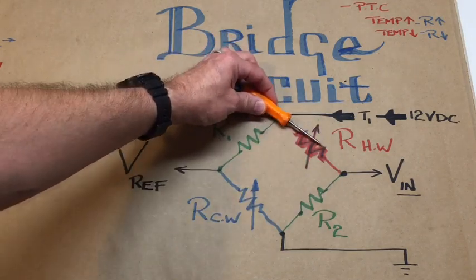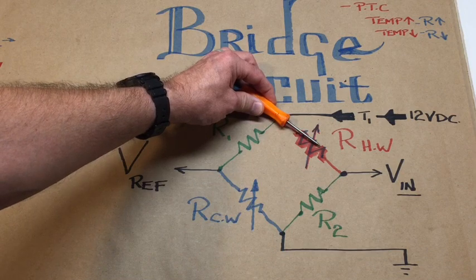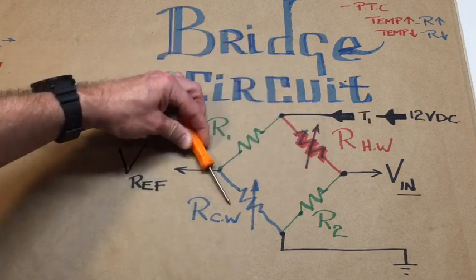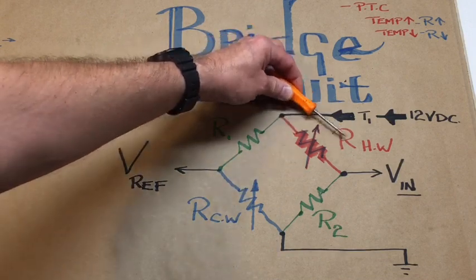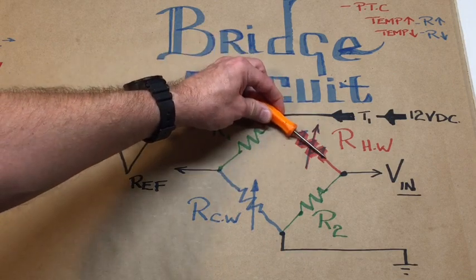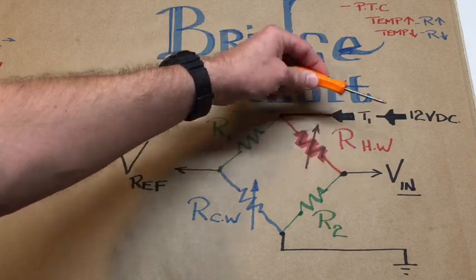Now let's say we start the car and we want this system to actually heat. The whole point of the bridge circuit here is to maintain the differential between the hot wire and the cold wire, the reference thermistor, in order to make the voltage output meaningful.